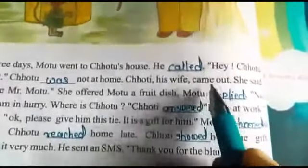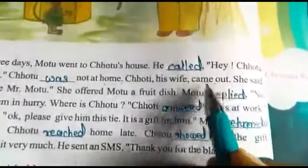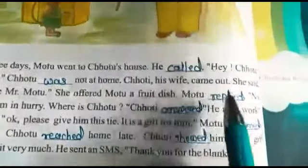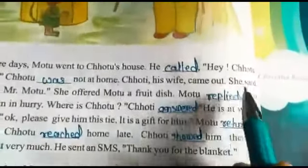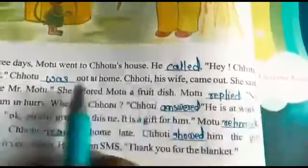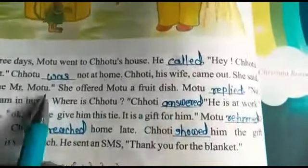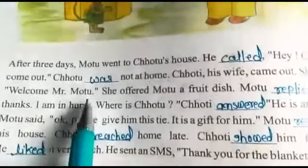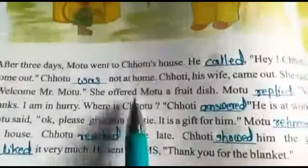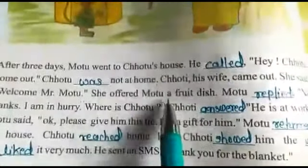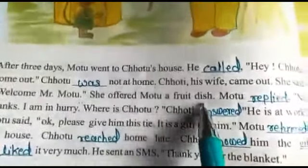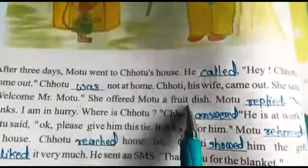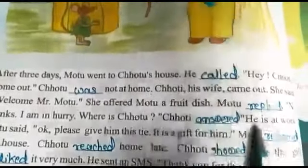Choti, his wife, came out. Tieno patni Choti bahaar ao. She said, 'Welcome, Mr. Mojo. Tamaru swagat chhe.' She offered Mojo a fruit dish. Tieno Mojo n'e fruit n'e dish offer kari.